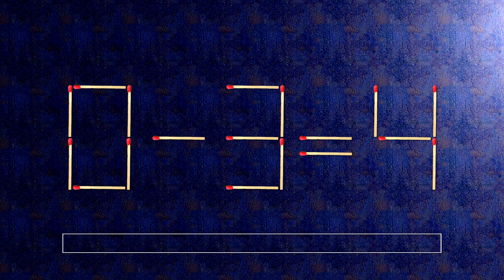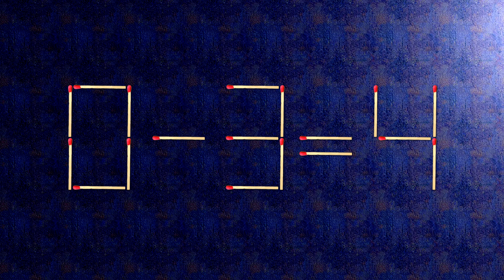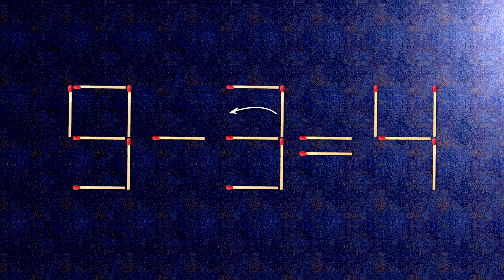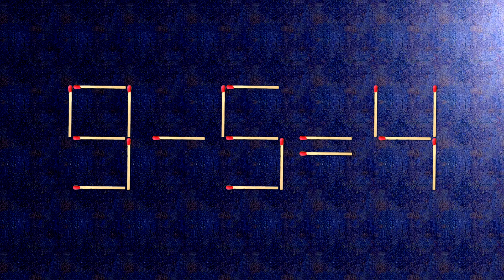How this puzzle is solved: all we need to do is move this match right here, and this match right here. When we check the condition, 9 minus 5 is 4. The task is done and the puzzle is solved.